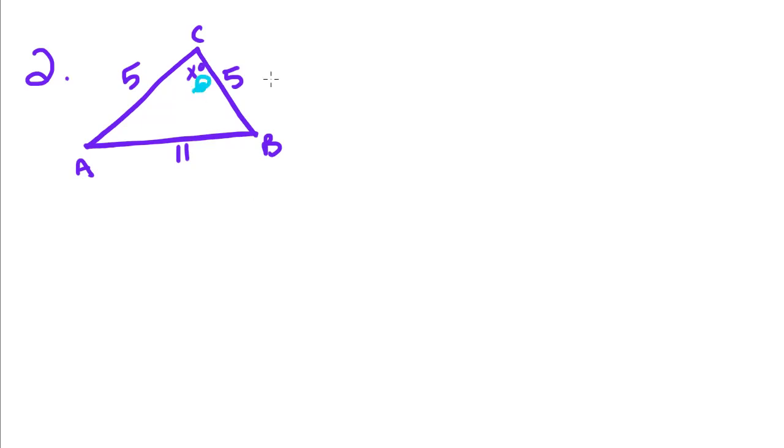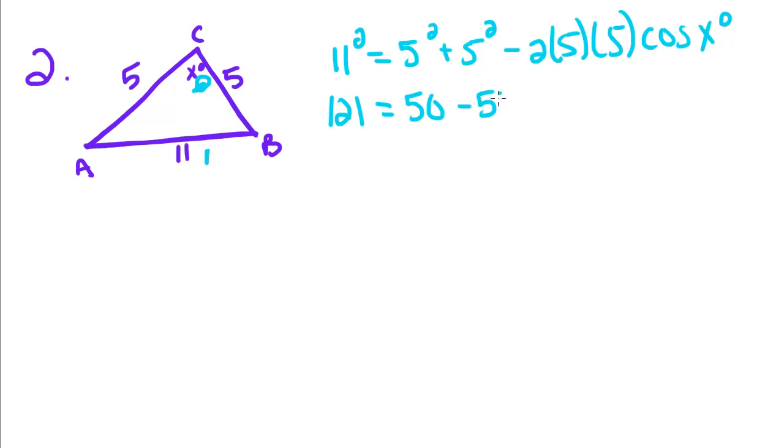So we're trying to solve for X, so we have to take the side opposite X, 11 squared equals the two sides squared minus 2 side times side cosine of X. So we're going to get 121 equals 5 squared is 25 plus 5 squared is 25, 50 minus 2 times 5 is 10 times 5 is 50 cosine of X.